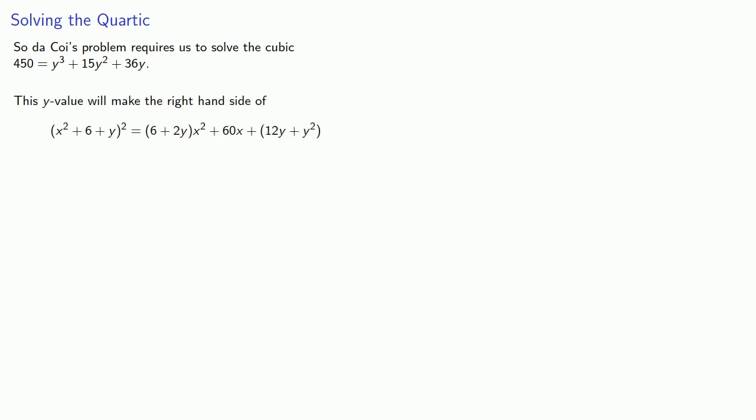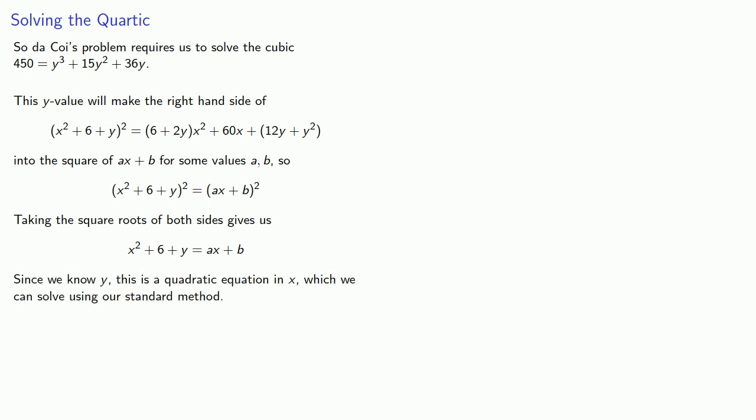This is all a very long and involved process, so let's summarize all of our steps. Takoe's problem requires us to solve the cubic 450 equals y cubed plus 15y squared plus 36y. This y value will make the right-hand side into the square of ax plus b for some values a and b. Since both sides will be perfect squares, taking the square roots of both sides gives us x squared plus 6 plus y equals ax plus b. Since we know y, and this was the motivation for Cardano publishing Tartaglia's solution to the cubic, this is a quadratic equation which we can solve using our standard method.